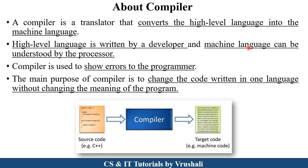Another work of the compiler is to analyze your complete source program, compile it, and if there are any errors present, it returns all the errors to the user. For example, this is a source code — say, C++ programming code. The compiler converts the source code into the target code, which means machine code or binary language.